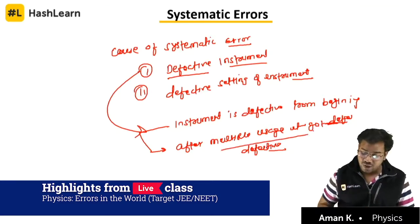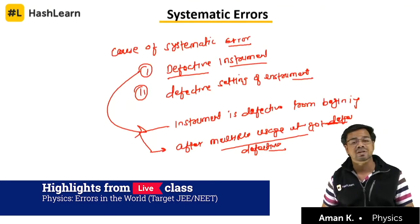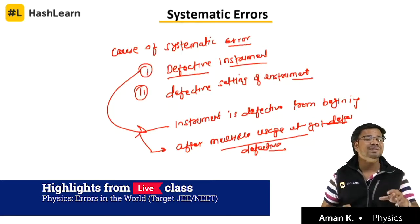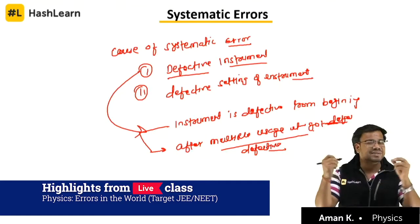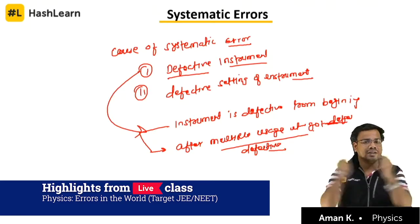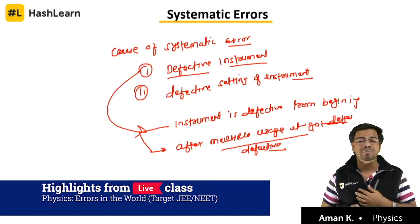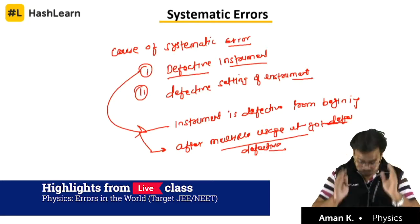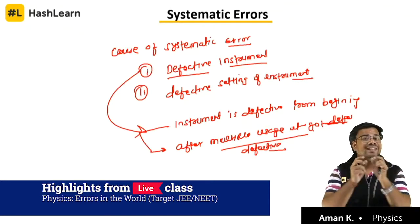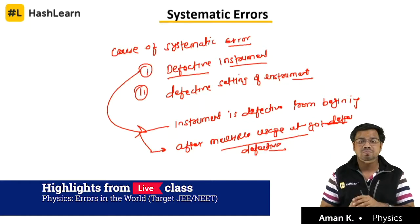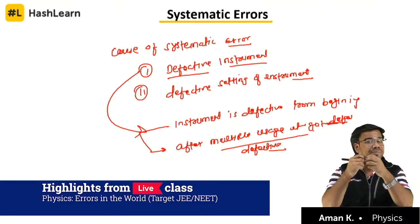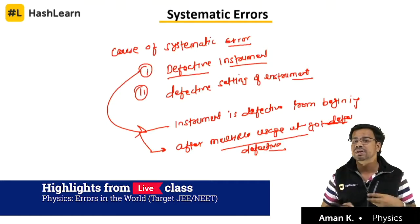How does an instrument get defective after multiple uses? For example, suppose I need to measure the length of cloth using an inch tape. Assume that because of multiple uses the inch tape is very old and it got stretched by a small amount. Whenever you measure the length of the cloth, you will always get more length than the actual. If the length is 10 meters, you will get 10.1 meters, because the tape is stretched by some amount.